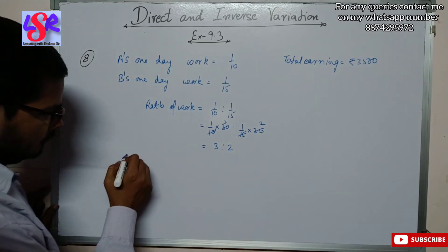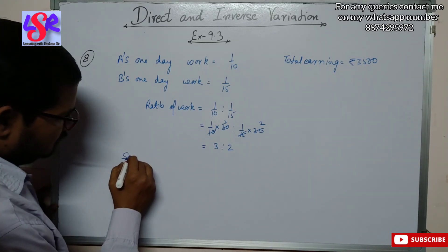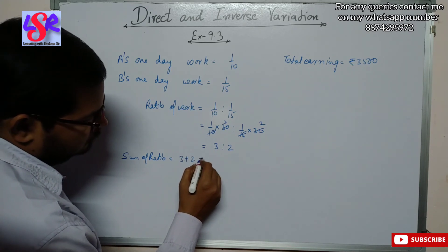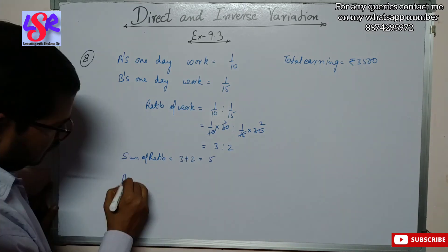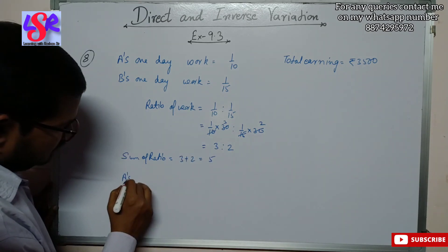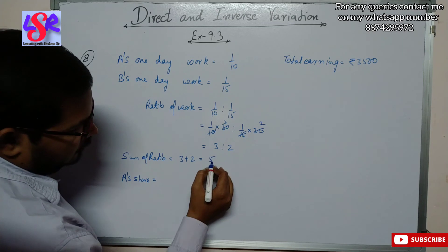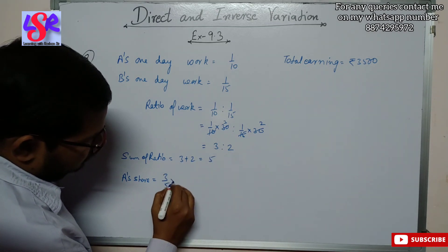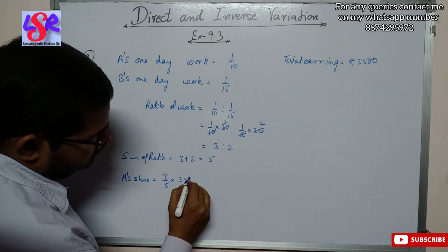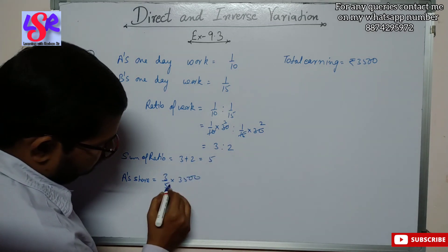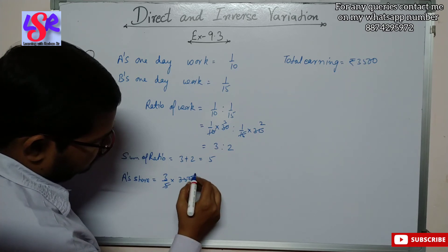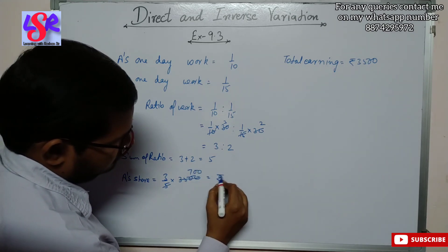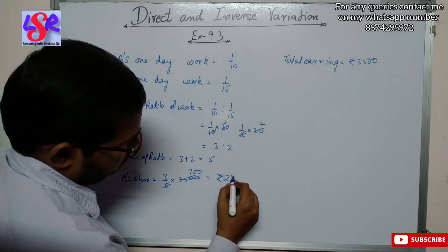The ratio of work done by A and B is 3 is to 2. The sum of ratio is 3 plus 2 equals 5. A's share equals 3 upon 5 into 3500. Here we get 700 times 3, that is rupees 2100.